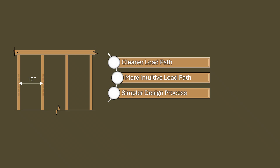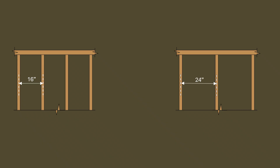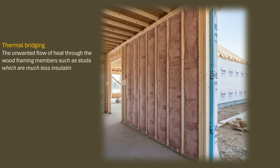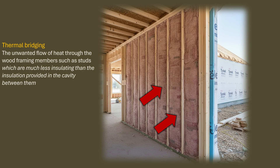While 16-inch spacing provides more vertical strength, 24-inch spacing has an additional advantage that does not get the recognition it deserves. A wider spacing reduces the number of studs in a wall, which in turn reduces thermal bridging — the unwanted flow of heat through wood framing members, which are much less insulating than the insulation in the cavity between them. Fewer studs mean a greater proportion of the wall area is insulated rather than framed with solid wood, allowing the thermal envelope to perform at higher efficiency than with studs at 16 inches on center.